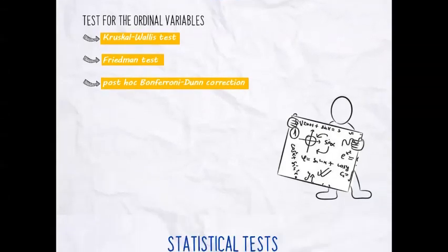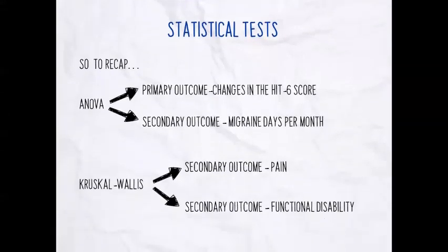To recap, since we spoke about many outcomes and many tests: ANOVA was used to test the primary outcome — changes in the HIT-6 score — and for one secondary outcome, migraine days per month. On the other hand, Kruskal-Wallis was used for the secondary outcome pain and for the other secondary outcome functional disability.